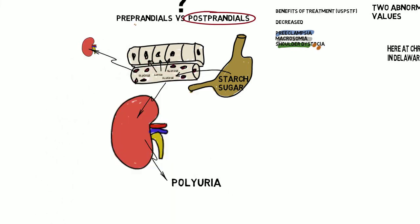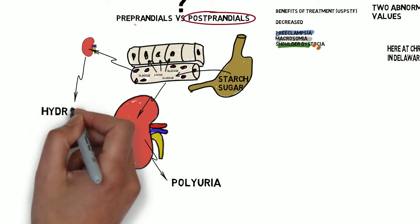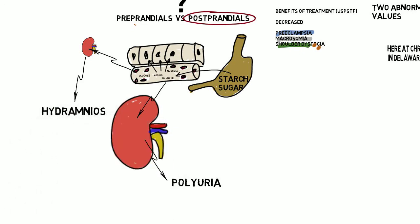The other thing that happens if the glucose level isn't brought down quickly is that the fetus sees that high glucose level. It urinates a lot and develops hydramnios. And the fetus's insulin works just fine, so it stores all that sugar, and the baby gets big.